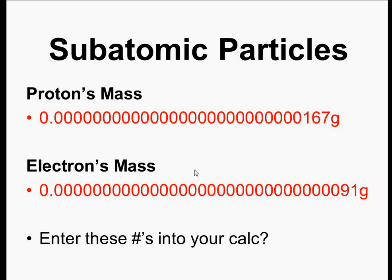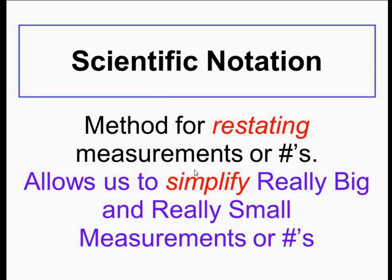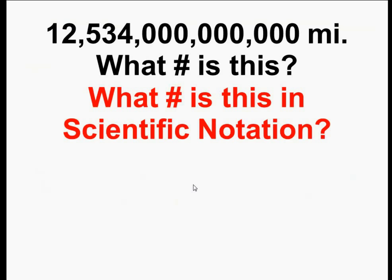So we're going to be using scientific notation today to try to get a handle on how to express numbers in a different way to make it easier for us to express them. My definition for scientific notation is that it is nothing more than a method for restating measurements or numbers. That's all it is — just a way for us to restate measurements or numbers. The key word here is it's going to simplify really big numbers and also really small numbers. That's the whole goal of scientific notation.